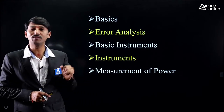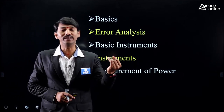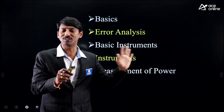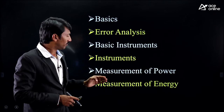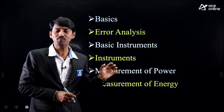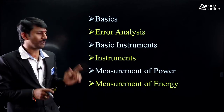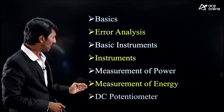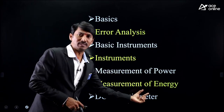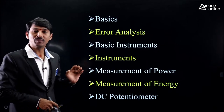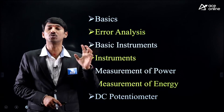Measurement of power covers DC power, AC power — single-phase and three-phase AC power measurement. After power measurement, we have measurement of energy — what is the formula, what construction parameters are required. After that, two special topics: potentiometer, which measures potential using a null indicating instrument principle, and instrument transformer, used for measurement of high AC current and high AC voltage.